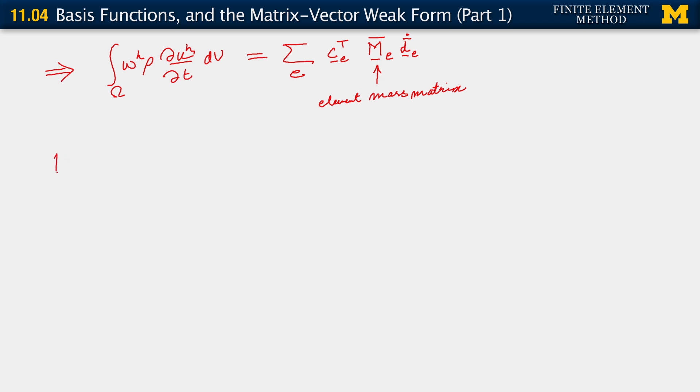Okay? Now I should make a remark here. Which is that if we have a general element that is not, that doesn't have one of its surfaces coinciding with the Dirichlet boundary, then of course we know that the C_e vector for that element is going to be full. It's going to have as many entries as the number, as the nodes in the element.